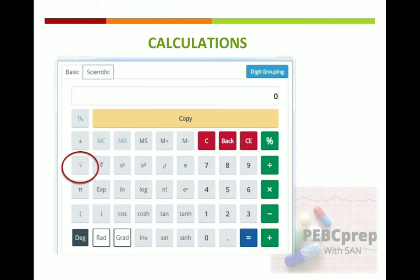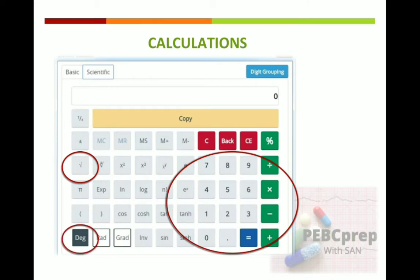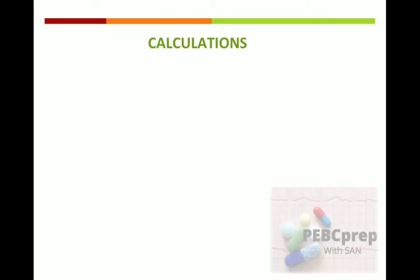In this calculator, you will see there is a square root button, and these are the number buttons. When you solve BSA, remember that the square root function is available. Also check that your calculator is set to degree mode. This calculator is available on the PEBC website — they provided a PDF image of it. Now continue with our sample questions.